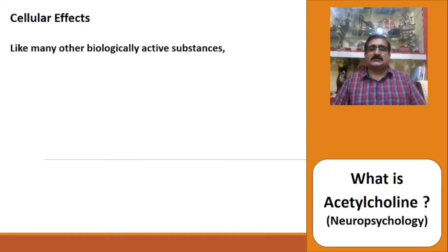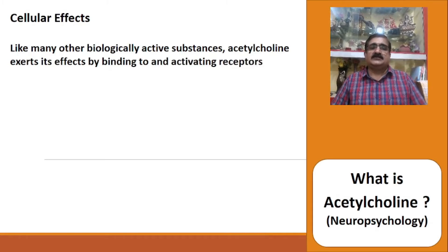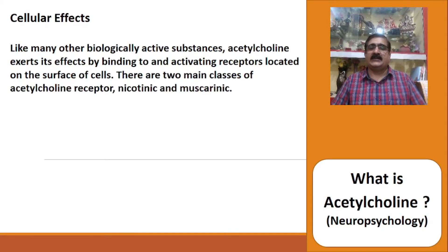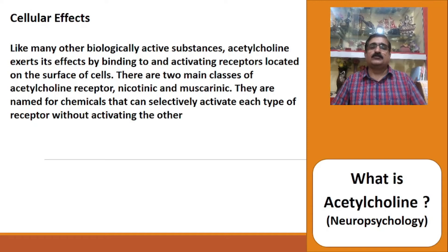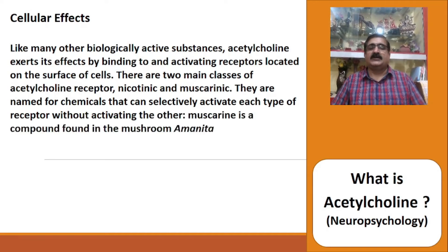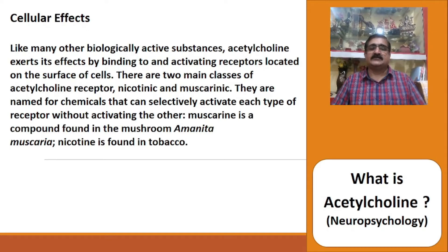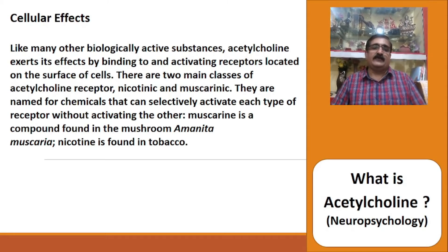Regarding cellular effects, acetylcholine exerts its effects by binding to and activating receptors located on the surface of cells. There are two main classes of acetylcholine receptor: nicotinic and muscarinic. They are named for the chemicals that can selectively activate each type without activating the other. Muscarine is a compound found in the mushroom Amanita muscaria, and nicotine is found in tobacco.